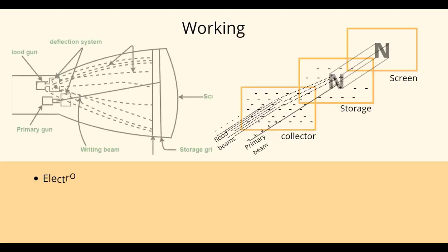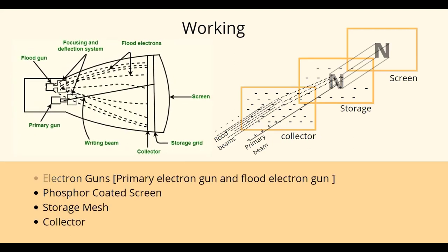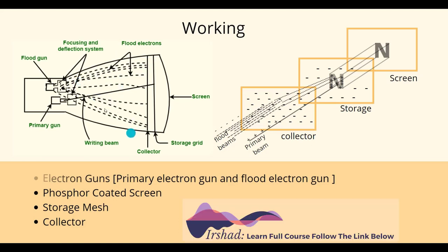Now we'll look at the whole process of how DVST works. Basically, the DVST consists of the following elements: a primary gun and a flood gun. The primary gun generates a positively charged beam, and the flood gun generates a negatively charged electron beam all over the collector. Then there is a collector, which reduces the speed of the negatively charged electrons. It also has a storage grid, also called a storage mesh, which stores the image — the actual writing or drawing of the image happens here — and finally a screen.